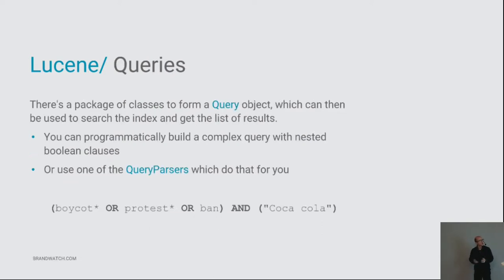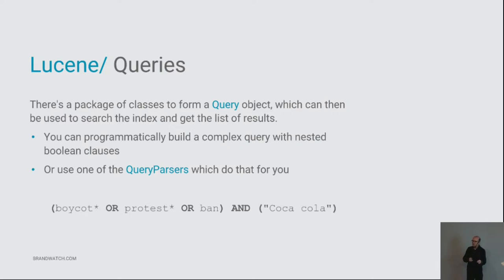The other key package in Lucene is how you actually search for things. A Query is the object which is run against the index to find results. You can construct it programmatically — building up a Boolean search that consists of sub-searches — or you can just use a parser. You can take a full text query string and the parser will turn that into a nested Boolean. It supports things like prefix wildcards — a star on the end of a word means any word that starts with that — and phrases.